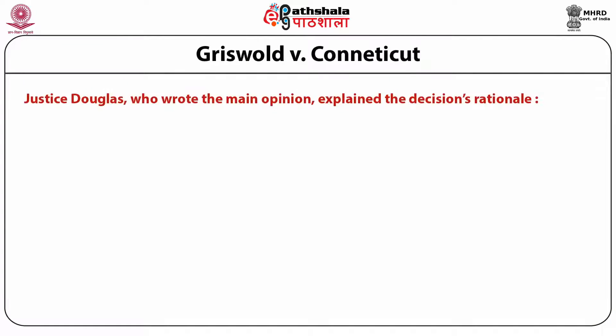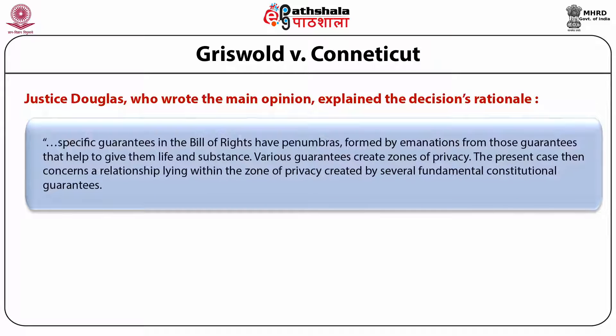Griswold was prosecuted and challenged the constitutional validity of the Connecticut law. By a 7-2 decision, the US Supreme Court declared the law unconstitutional. Justice Douglas wrote the majority opinion and explained the rationale, stating: 'Specific guarantees in the Bill of Rights have penumbras formed by emanations from those guarantees that help give them life and substance. Various guarantees create zones of privacy.'